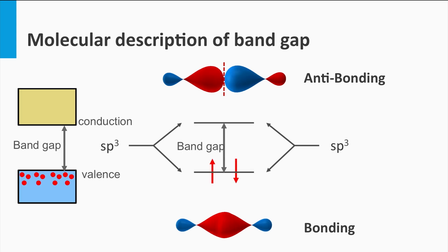For silicon, the far majority of electrons fill up the lowest bonding state. These lower bonding states reflect the valence band as introduced earlier. The antibonding states correspond to the conduction band and are hardly occupied by any electrons. The gap between the bonding and antibonding states corresponds to the band gap.